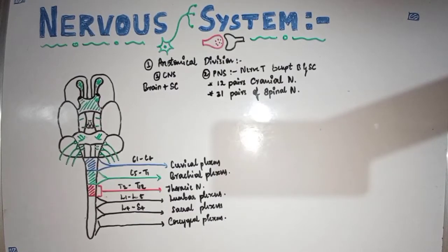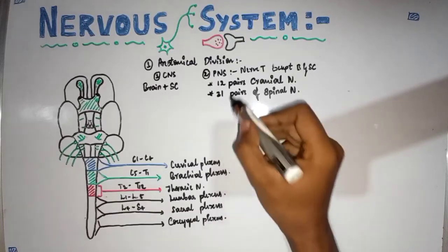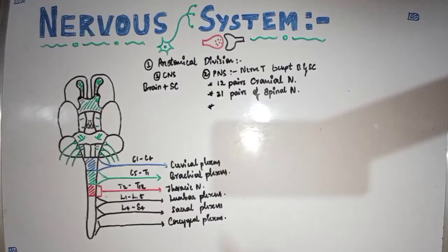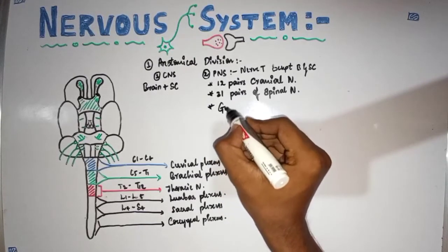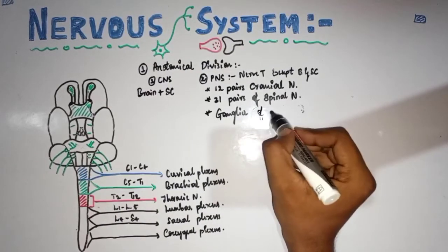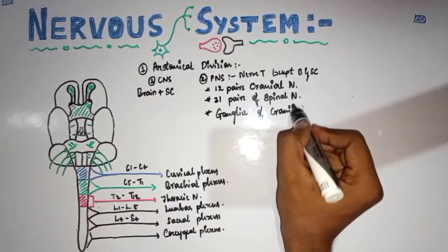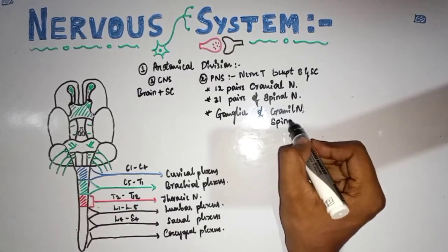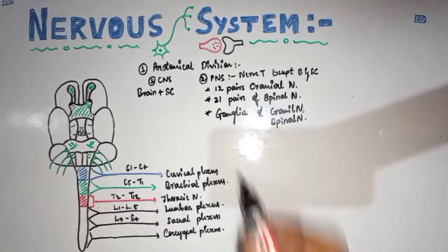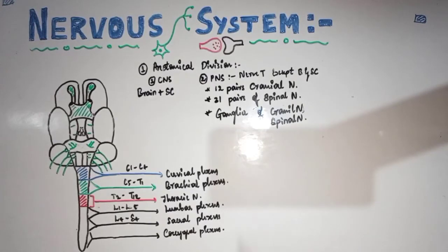These are the 31 pairs of spinal nerves, and the 12 pairs of cranial nerves are included under the peripheral nervous system. In addition to these two, another kind of nervous tissue included under the PNS are ganglia — the ganglia of cranial nerves and spinal nerves. A ganglion is a collection of cell bodies of neurons.